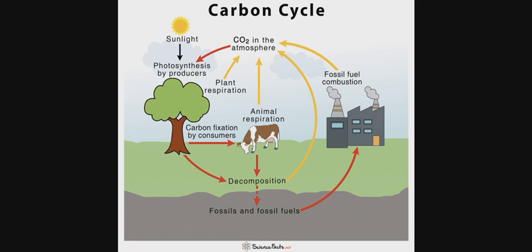Burning of fossil fuels and volcanic activities return carbon to the atmosphere. The impact on the carbon cycle is that more carbon moves into the atmosphere. Most of the carbon in the atmosphere is in the form of carbon dioxide gas. By increasing carbon dioxide, the earth becomes warmer — global warming will be occurring.